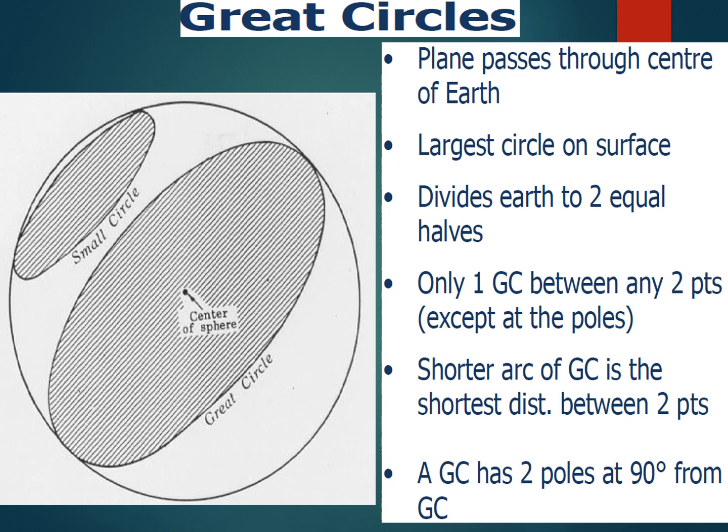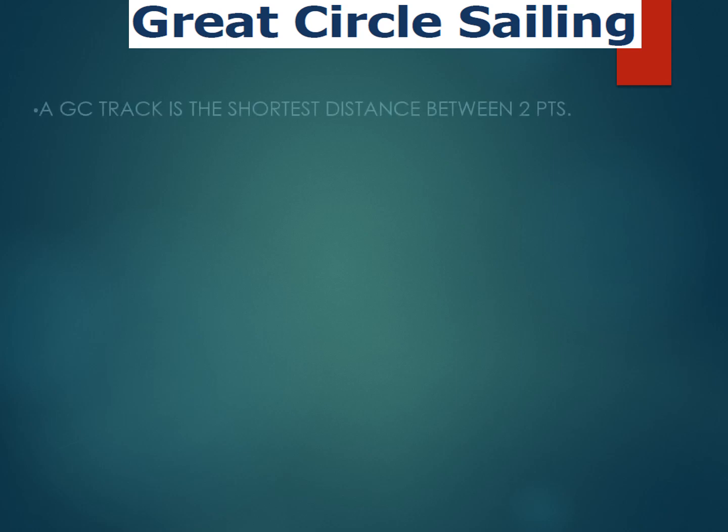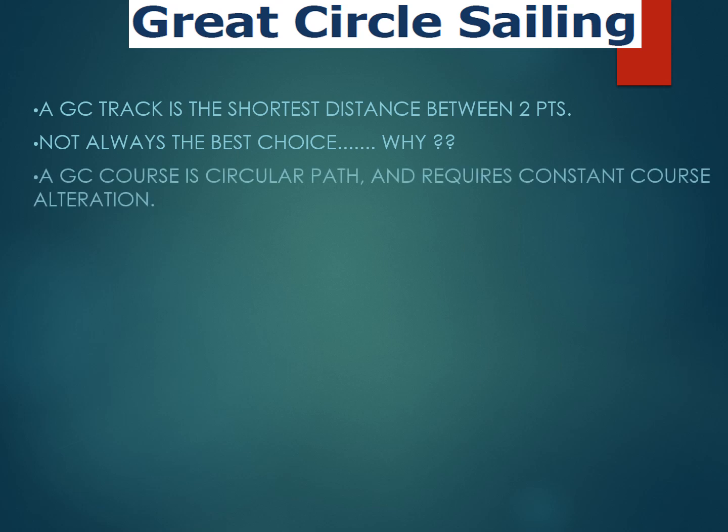A great circle divides the earth into two equal halves. There is only one great circle possible between any two points, except when at the poles, and the shorter arc of the great circle is the shortest distance between two points. A great circle has two poles 90 degrees away. However, the great circle track, while being the shortest distance between two points, is not always the best choice.